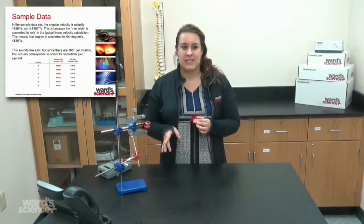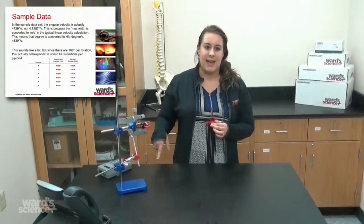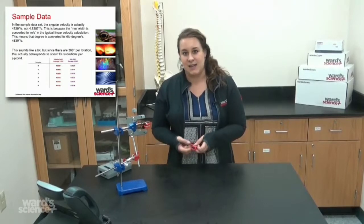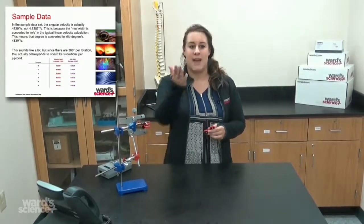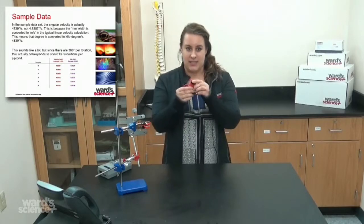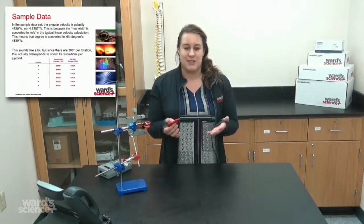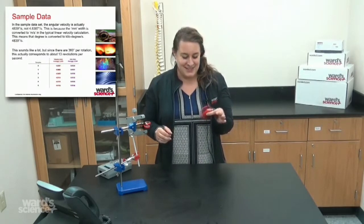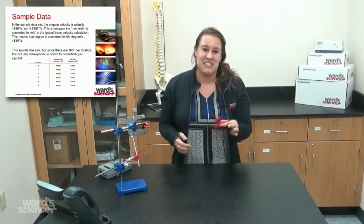In the sample data set, the angular velocity is actually 4,839 degrees per second, not 4.8387, and that's because the millimeter width is converted to meters per second in the linear velocity calculation. This means that the degrees are converted to kilo-degrees per second. That actually sounds like a whole lot, but since there are 360 degrees per rotation, this actually corresponds to about 13 revolutions per second. Whoever did this really—I mean, that's pretty hard. I don't think I can achieve 13 revolutions per second, but the person who wrote this content is very strong.